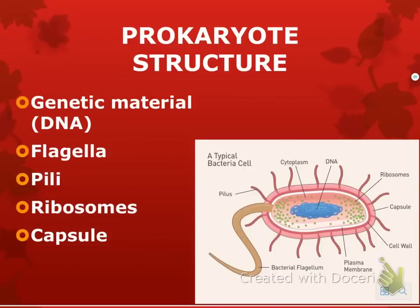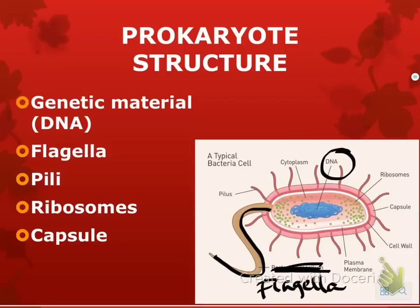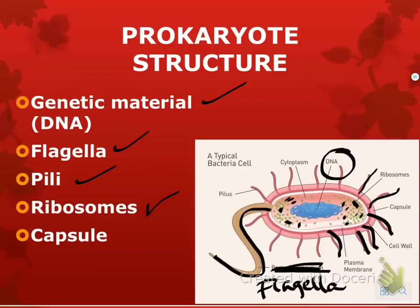Prokaryote structure: this picture has more than you need to know, but the important parts are: the DNA, the flagella — basically the tail, called the bacterial flagellum. Pilli are just the little hairs. Ribosomes are all those dots you see in the middle. And the capsule is kind of like the outside protection — there's a cell wall, and then the capsule completely surrounds it, which is why bacteria can live in so many different environments.